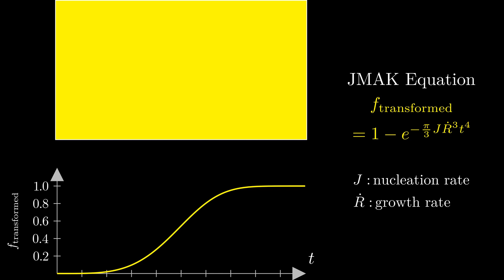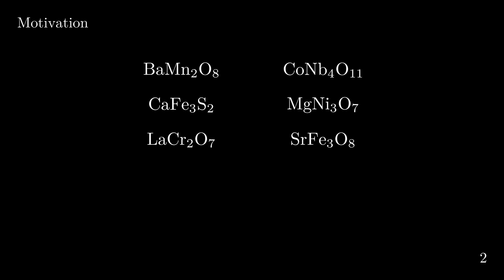If we know the nucleation and growth rates, the JMAC equation can tell us at any given time t the phase fraction by volume that has been transformed. This is all well and good — we can see how this can make a good exam question. But how do we use it in real-world applications? Imagine you are a computational material scientist and you have predicted many new compounds with some amazing properties.